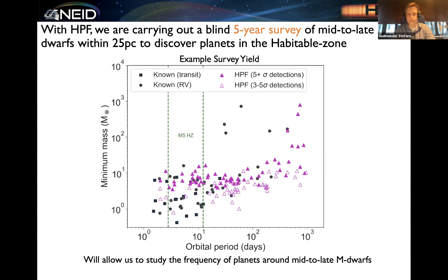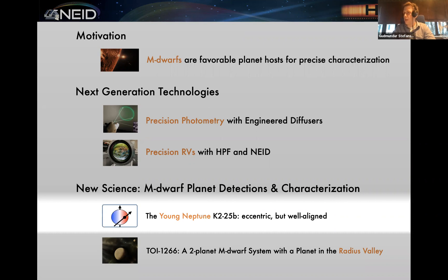That was the main things I wanted to say about the near infrared RVs with HPF and NEID. Are there any questions on the RVs so far? If not, we can dive into a couple of new exciting science cases where we've been using both the precision photometry capabilities with diffusers and precision RVs with HPF and NEID to detect and characterize new planets with these precision instruments.